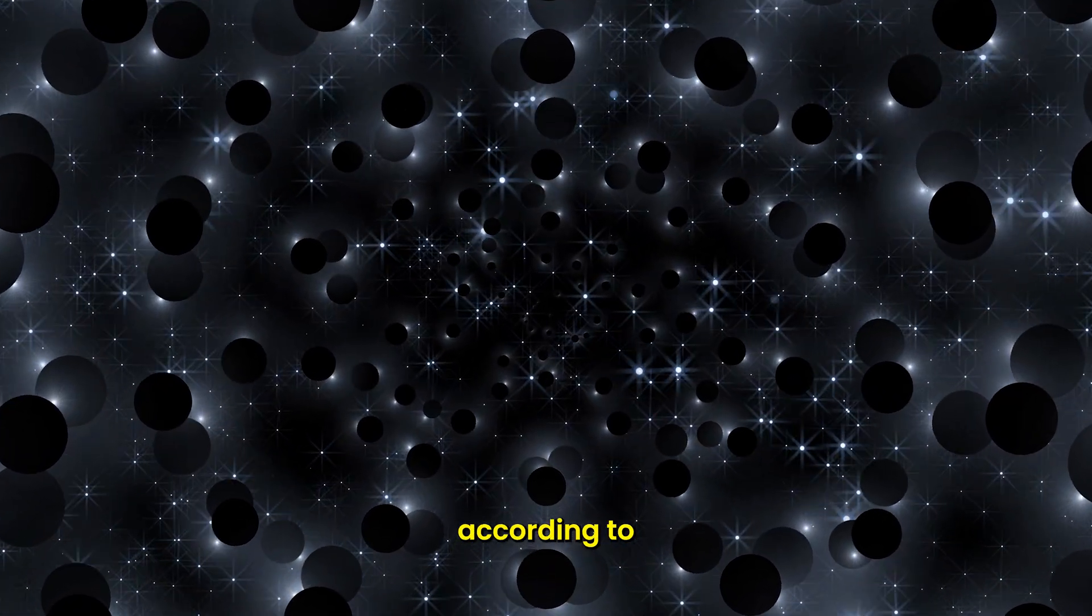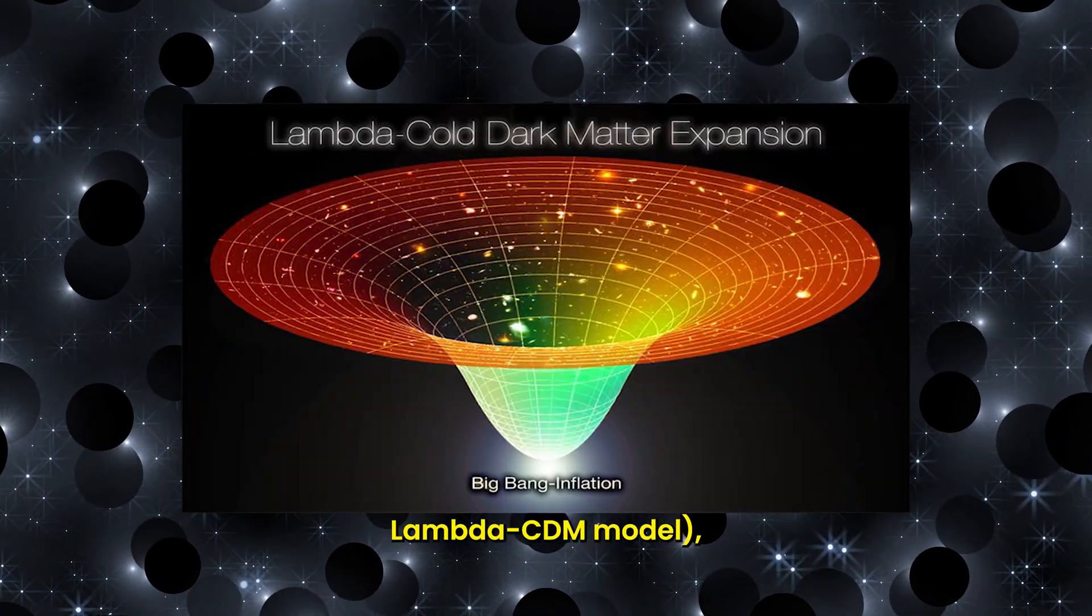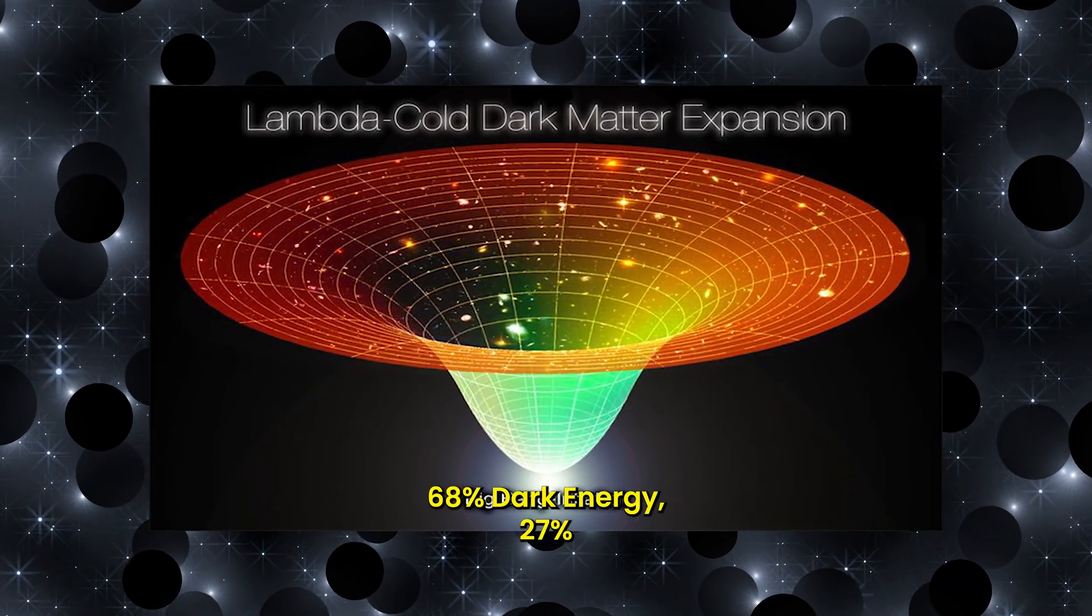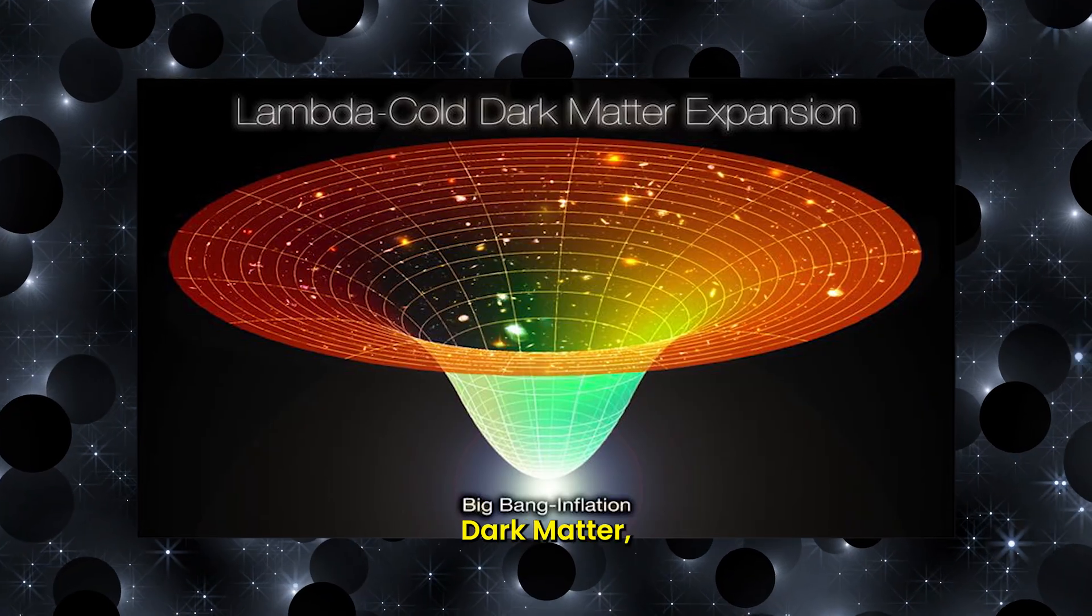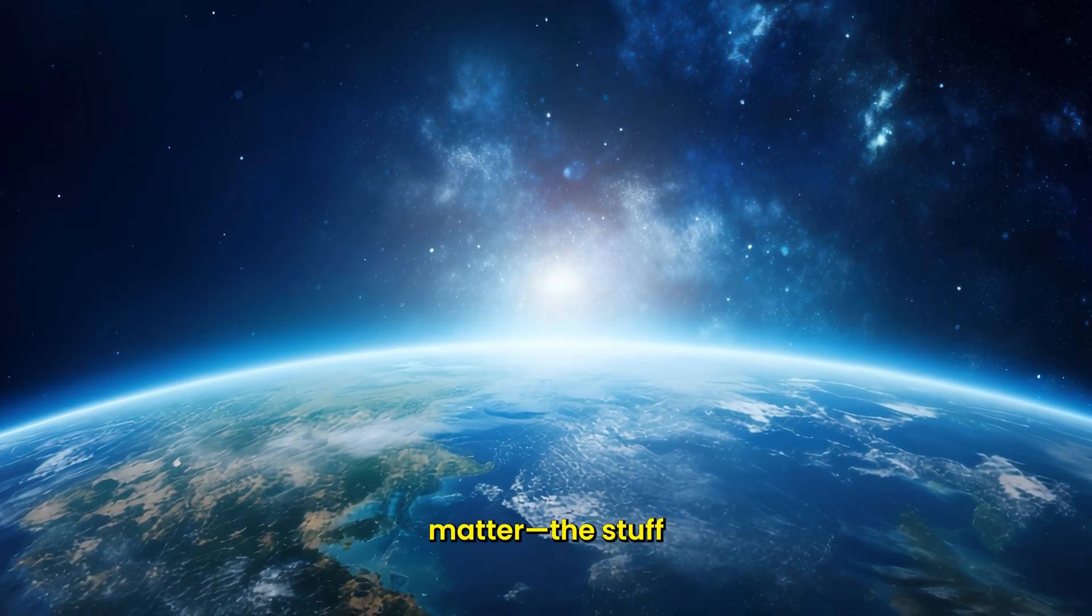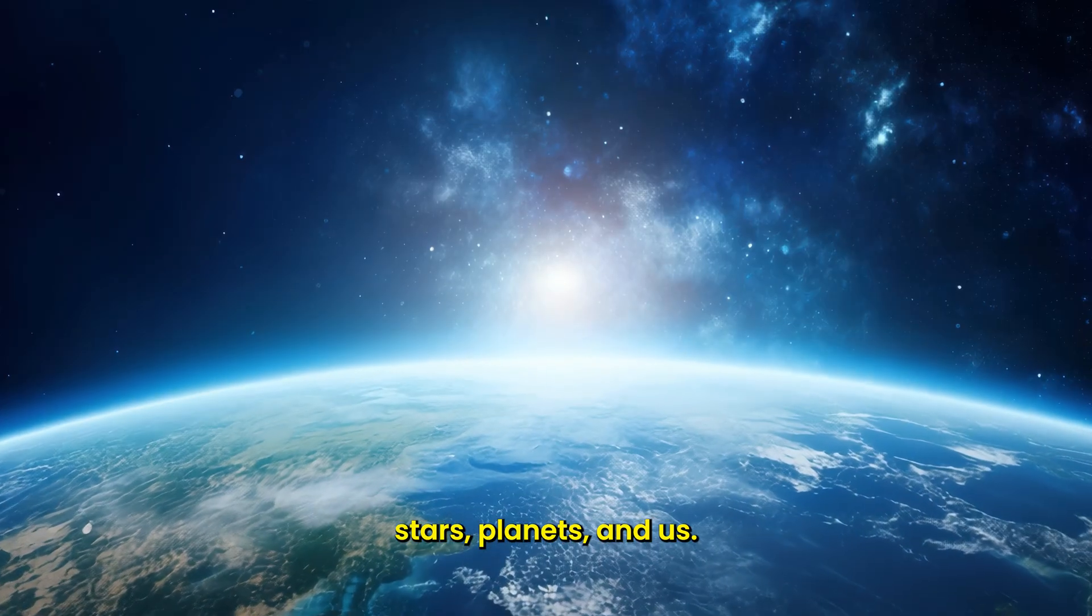Our universe, according to our best models, the Lambda CDM model, is composed of approximately 68% dark energy, 27% dark matter, and only a measly 5% ordinary matter, the stuff that makes up stars, planets, and us.